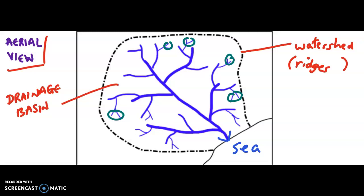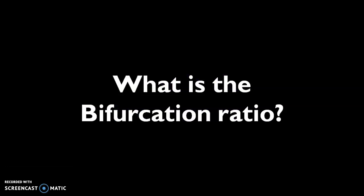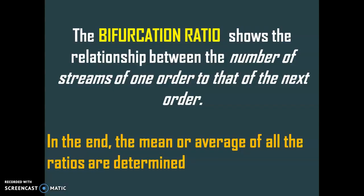It's a very detailed, intricate network, and it varies. Every drainage basin would vary depending upon the size of the area, the topography of the slope, and the rock type — all factors which influence the basin characteristics. Now, the bifurcation ratio shows the relationship between the number of streams in one specific order to that of the next order.